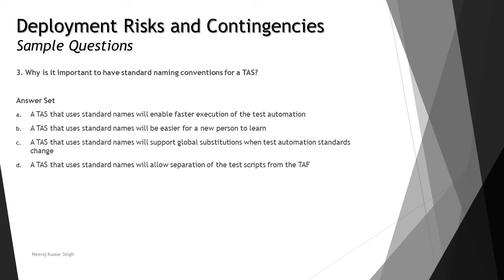Question number three: why is it important to have standard naming conventions for a TAS? We covered naming conventions in tutorials just before this one. The options are: option A — a TAS that uses standard names will enable faster execution of test automation. This has nothing to do with execution speed, since there are several other factors involved there. Option B — a TAS that uses standard names will be easier for a new person to learn. Having an organization-level standard naming convention would help any individual easily follow and understand scripts already prepared.